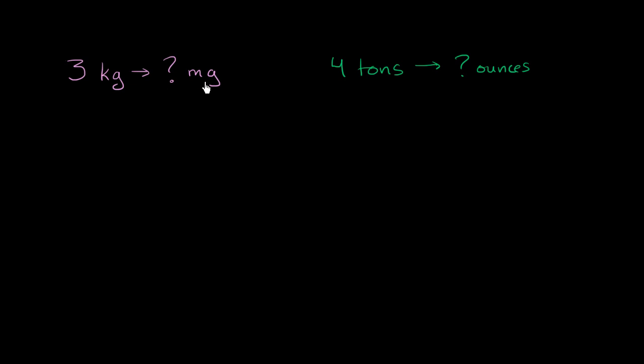Well, to think about this one, we just have to think about what these prefixes mean. So I could rewrite it. This is three kilograms. And we're going to convert into some amount of milligrams. And we've already seen that the prefix kilo, this literally means 1,000. And the prefix milli means 1 over 1,000 or 1,000th of a gram.